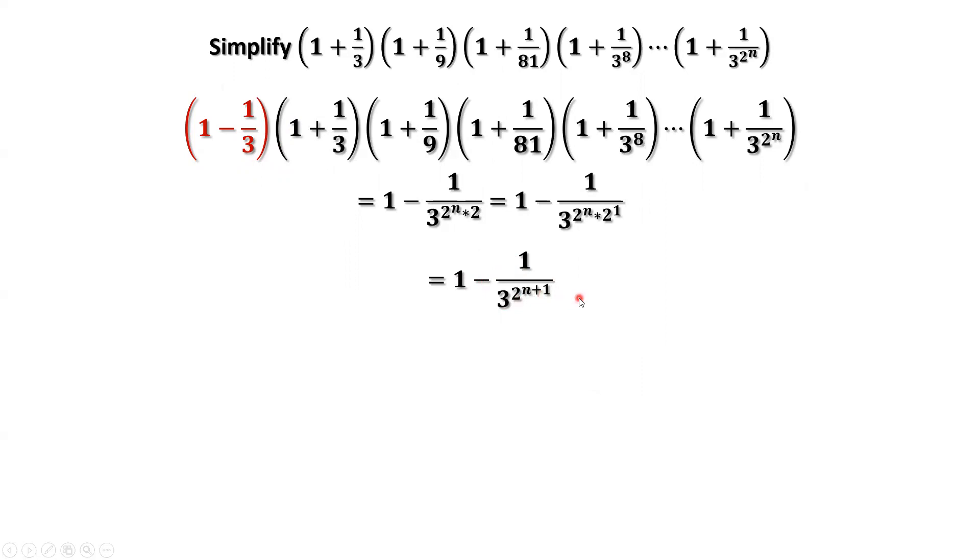What is the question? The question is to simplify this expression without 1 minus 1 over 3. How to get rid of 1 minus 1 over 3 in this result?